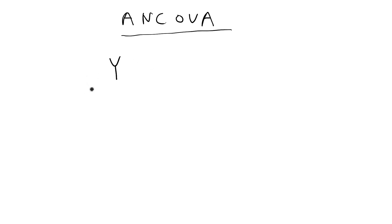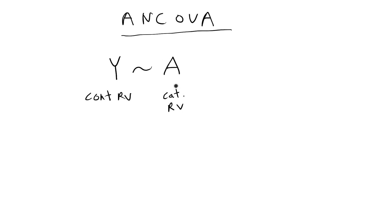In a one-way ANCOVA model you have an outcome variable y, which is a continuous random variable, and you're going to regress it on just one categorical factor or categorical variable that I'm going to label as a. A is a categorical random variable, plus you're going to have at least one covariate that I'm going to label as x, and x is a continuous random variable. Having an outcome variable regressed on a factor and a continuous covariate is known as an analysis of covariance model, or ANCOVA model.